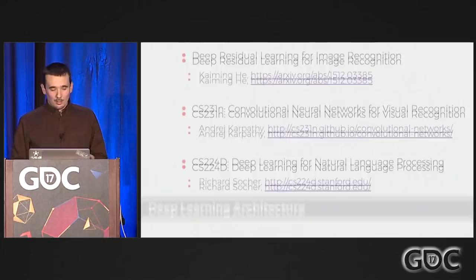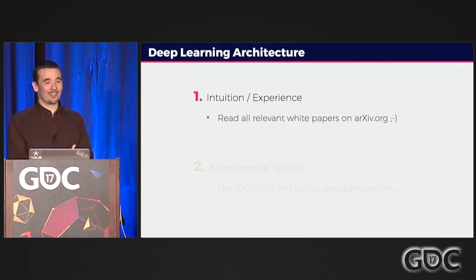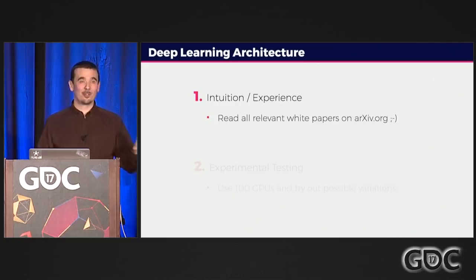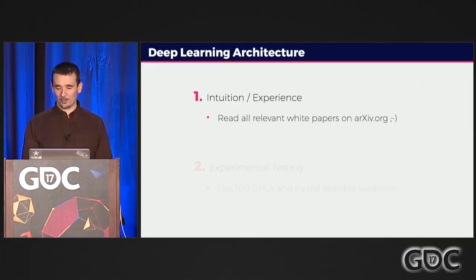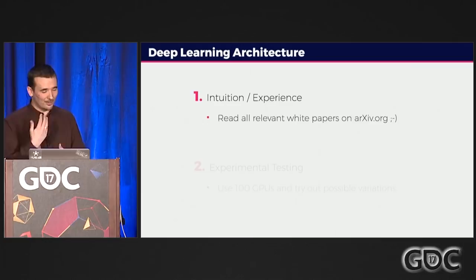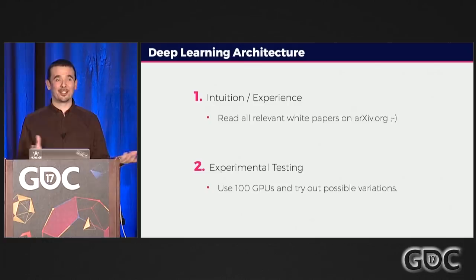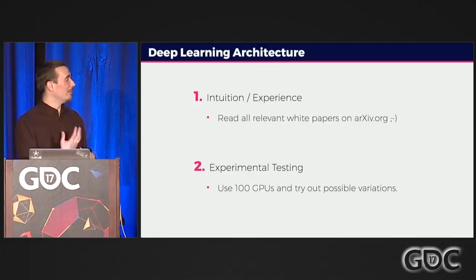Deep learning is difficult to get right when figuring out what to plug together — it's a very intuition-driven process. This is the part where the dark art comes in. You need some sense of what's going to work, and you can develop that by reading lots of papers in the field. Every morning I try to read PDFs from arXiv, a preprint server the machine learning community has converged on, to find architectures related to what you're trying to solve. If you have access to hundreds of GPUs and are willing to spend on cloud compute, you can try all the different variations of your architecture experimentally — it can be expensive, but it makes it a more methodical science.